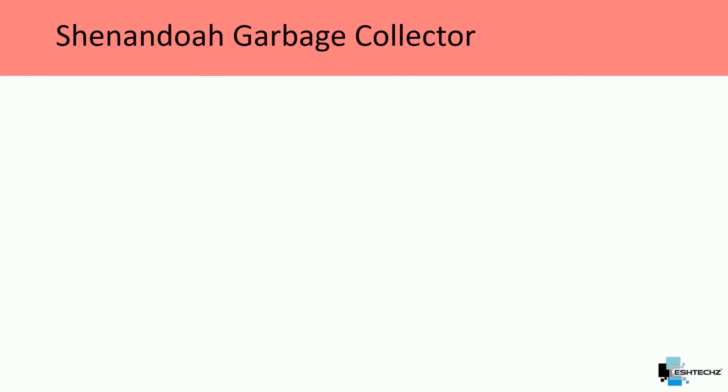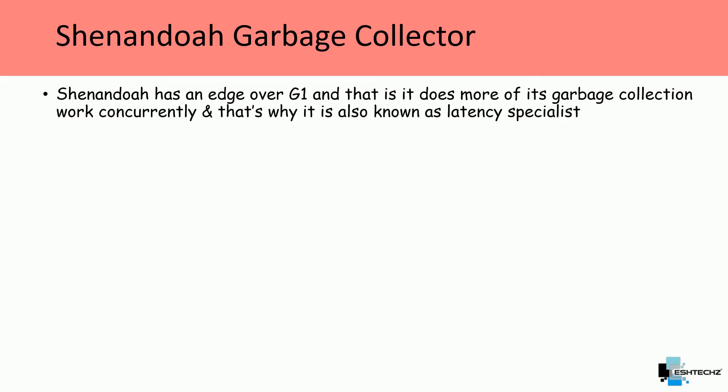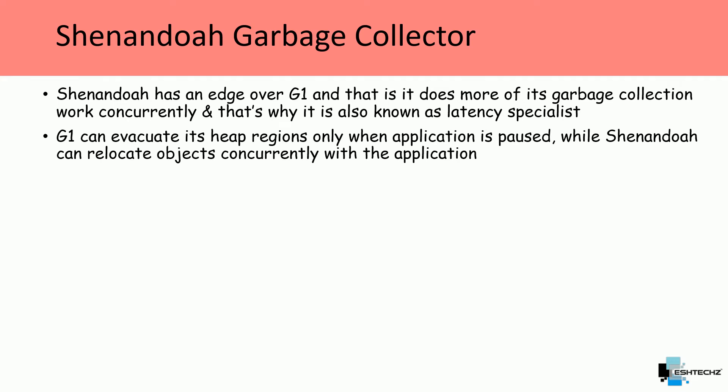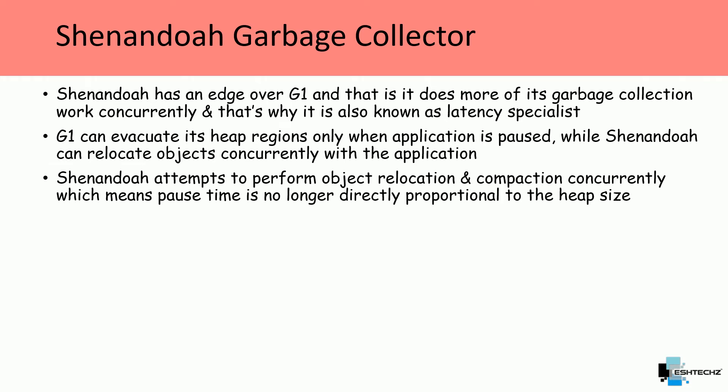The next one is the Shenandoah garbage collector. Shenandoah has an edge over G1 in that it does more of its garbage collection work concurrently, which is why it is also known as a latency specialist. G1 can evacuate its heap regions only when the application is paused, while Shenandoah can relocate objects concurrently with the application. This means pause time is no longer directly proportional to the heap size.